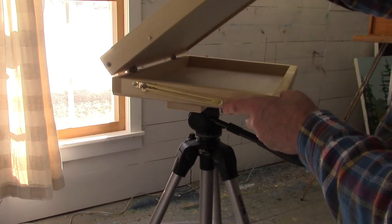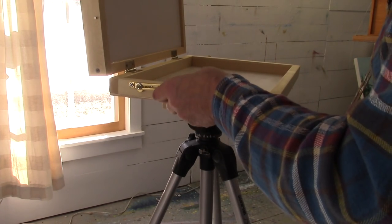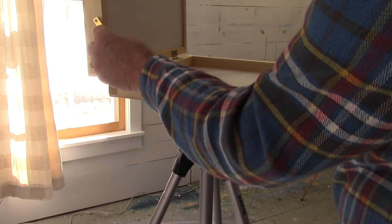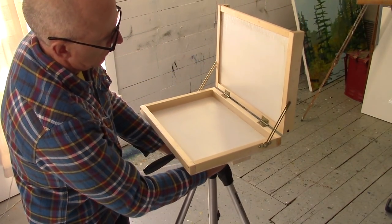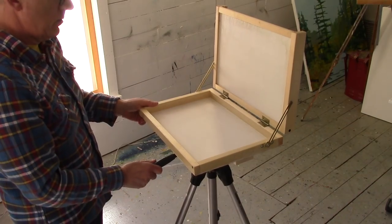When you open the lid, you secure it in place with these modified friction lid support arms. The entire paint box can be easily raised or lowered or tilted.